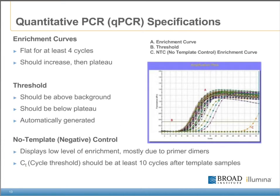Here on the right we see a typical qPCR plot. We keep an eye on three basic aspects. First, we verify that the sample produces an enrichment curve, labeled A in the graphic. We want the enrichment curve to be flat for at least four cycles of PCR, then increase, and then plateau. Second, we look at the threshold, labeled B in the graphic — an automatically generated line which should be above the background and below the plateau. Third, we look at the no-template control curves, the negative control, labeled C. These negative control wells typically display a low level of enrichment, mostly due to primer dimers, and their amplification should occur at least ten cycles after the experimental samples.